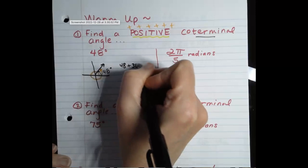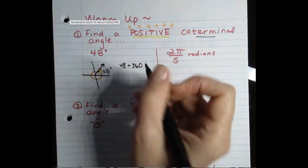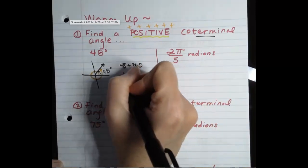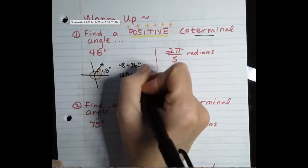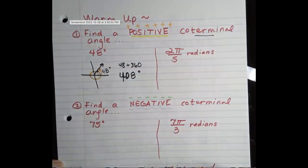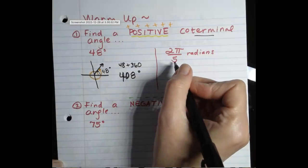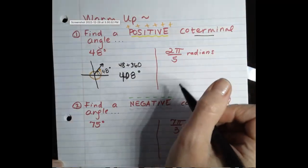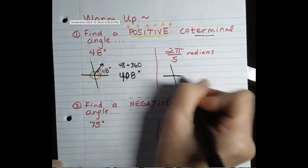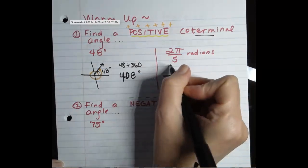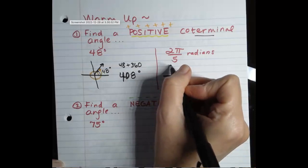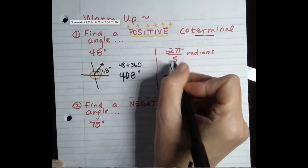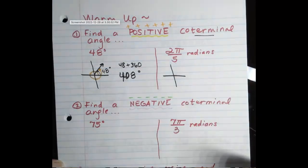So 48 degrees is going to be somewhere about right there in the first quadrant. If we were to rotate all the way around, we just need to add 360 to that. So 48 plus 360 is going to be 408 degrees. Now what if we give it in terms of radians? Let's think about where 2π over 5 would be. We know that at the top is π over 2.